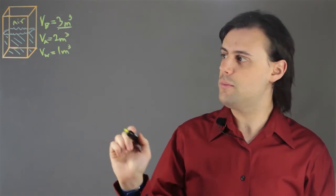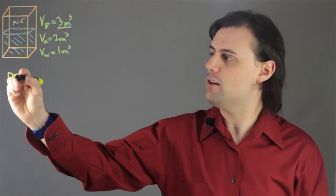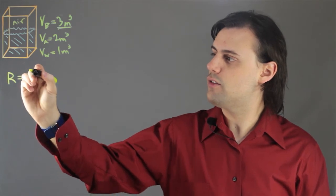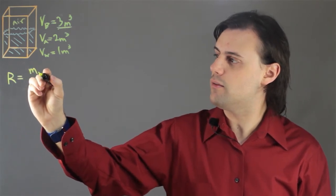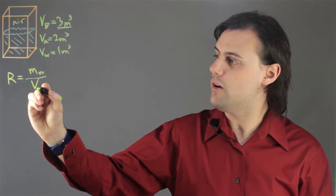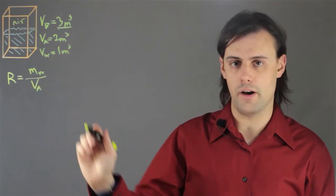So to determine this ratio that we're interested in, we need to first find the total mass of the water and then divide that by the volume of the air inside the box.